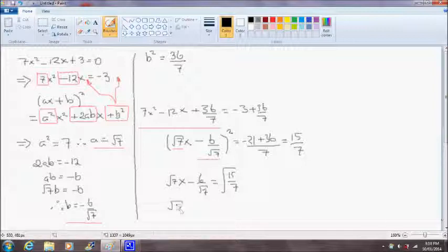And working our way through, root 7x is equal to... because we've taken the square root, we have to make note that it yields two solutions, a positive and a negative.